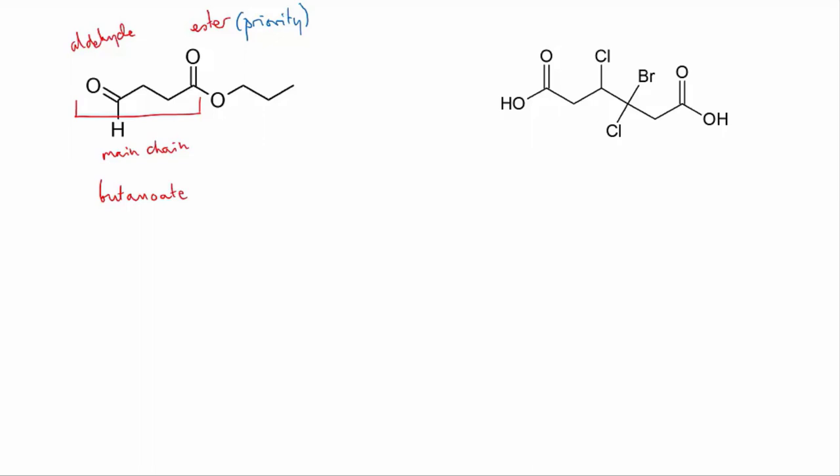Now we have the aldehyde group and the other part of the ester still to deal with. Let's do the aldehyde first. It's on the main chain so we're going to number from the carbonyl group backwards, treating the aldehyde as a substituent.